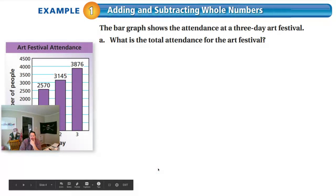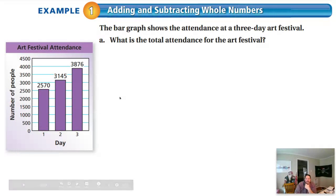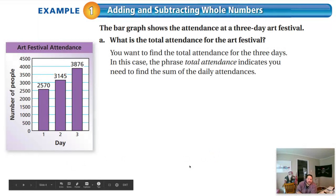The first operation we will be doing is addition. We have a bar graph right here. It shows art festival attendance over the course of three days. A lot of people attended this festival, especially on day three. Very popular art festival, apparently. If we're finding the total attendance for the art festival, what operation are we doing? Yes, we are doing addition. You want to find the total attendance for the three days. In this case, the phrase total attendance indicates you will need to find the sum.